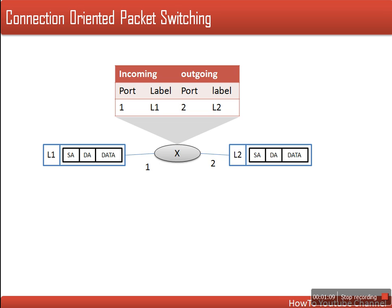Here is the information every router stores for those paths. As you can see, we are having an incoming port and an outgoing port. Whenever a packet arrives at this router, the router will check the destination address, and by referring to its routing table, it will find out what the outgoing port will be.